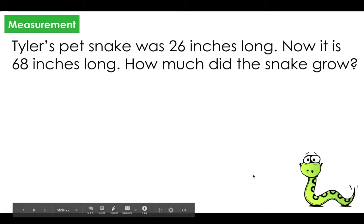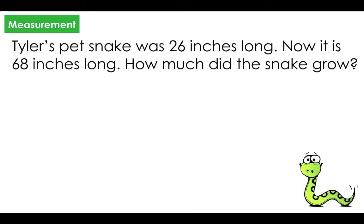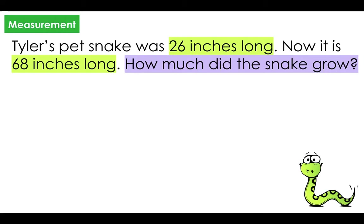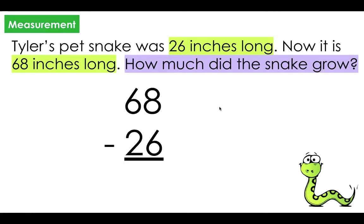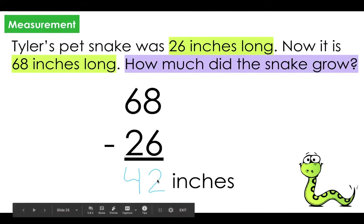Measurement. Tyler's pet snake was 26 inches long. Now it is 68 inches long. How much did the snake grow? I highlighted my important information: 26 inches long and 68 inches long. I need to figure out how much the snake grew. It's 68 inches long now, so it wouldn't make sense for the answer to be more than that. I think I need to subtract 26 from 68, and I plan to use the vertical method. 8 minus 6, 6 minus 2: 42 inches. Second grade, do not forget to put your label on your story problems.